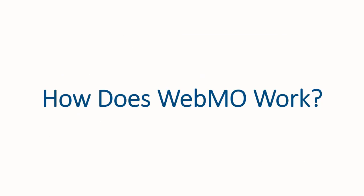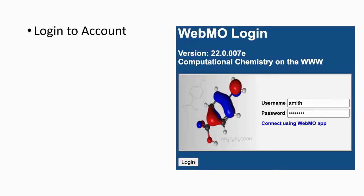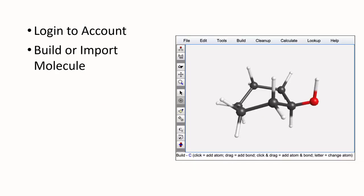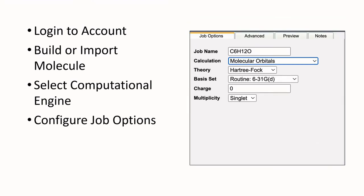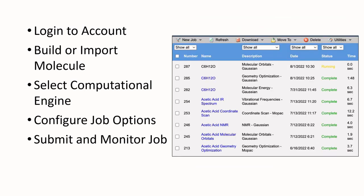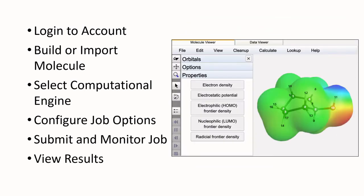How does it work? To run a computational chemistry job using WebMO, users sign into their account, build or import a molecule, select a computational engine, configure job options, submit and monitor the job, and view the results, all from within a web browser.